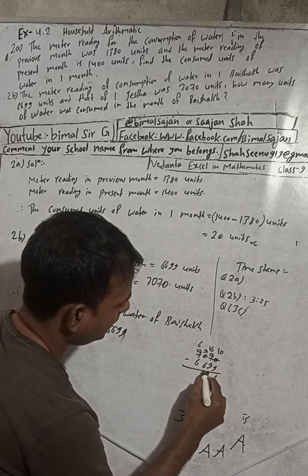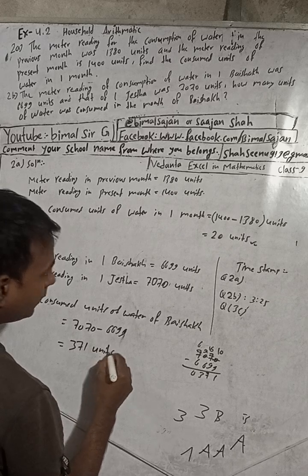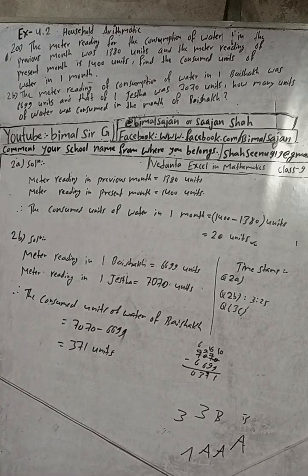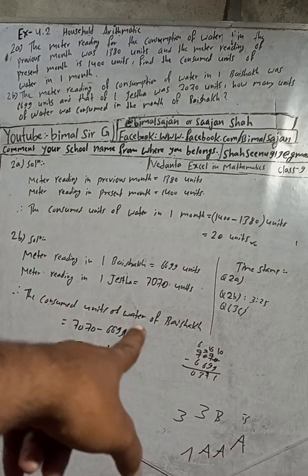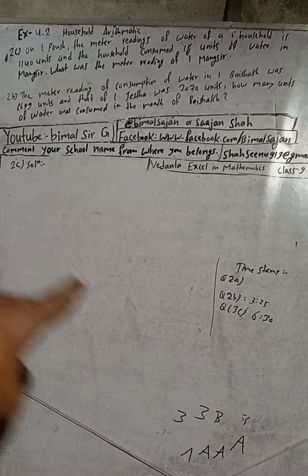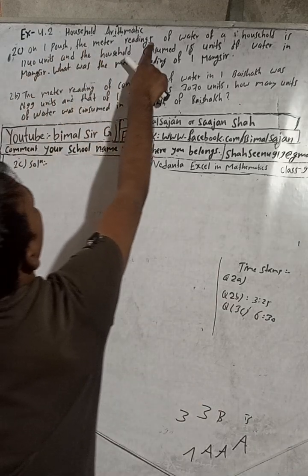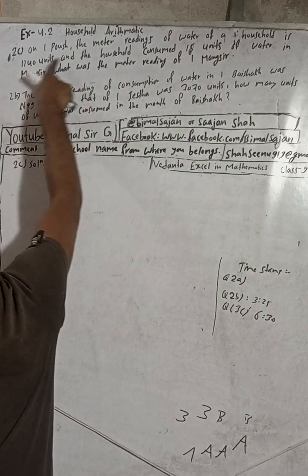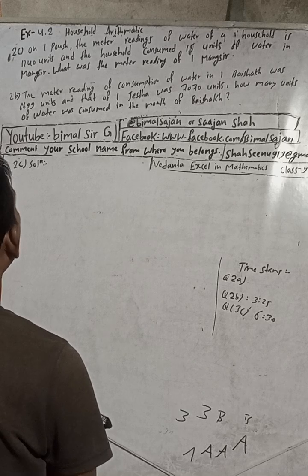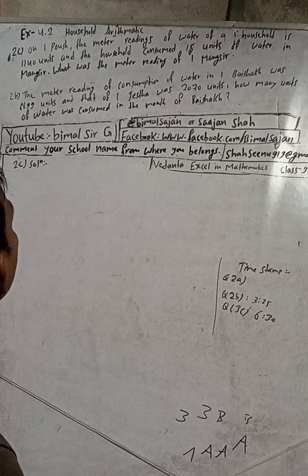Now I will pause the video and write question number 2c. The time stamp I will provide — the time for this question will be 6 minutes 30 seconds. The question is: on first Poush, the meter reading of water of a household is 1140 units, and the household consumed 50 units of water in Mangsir. What was the meter reading of first Mangsir?